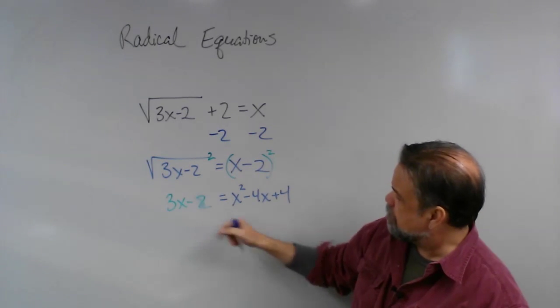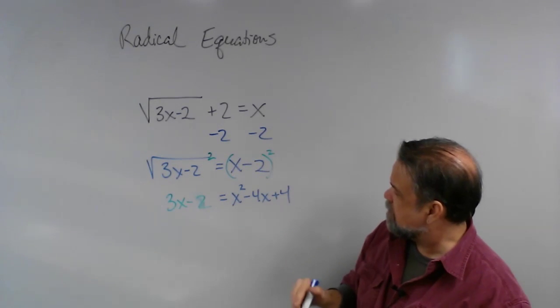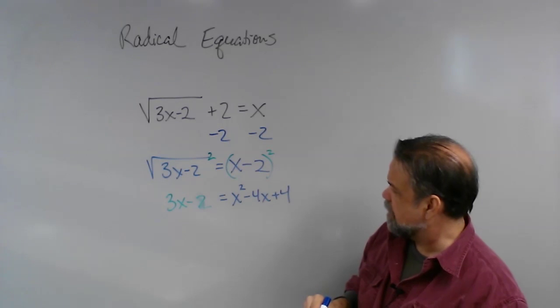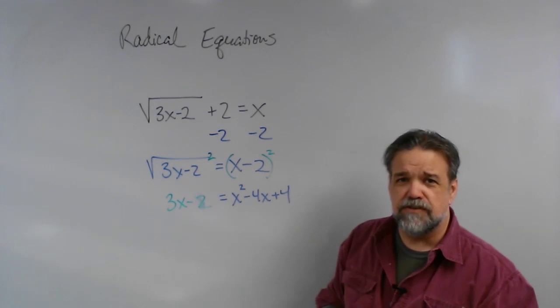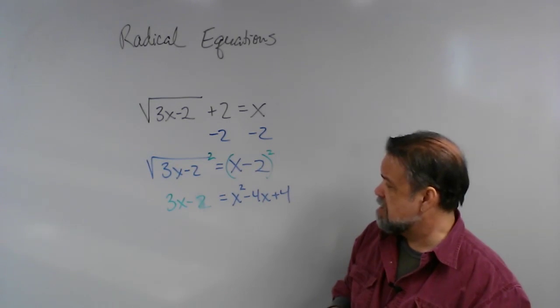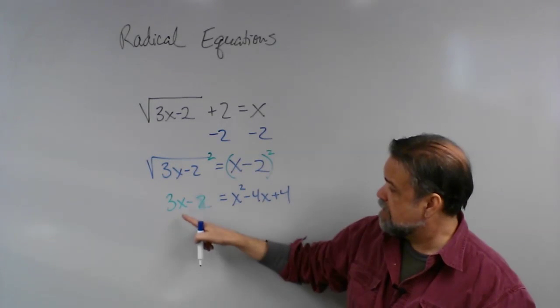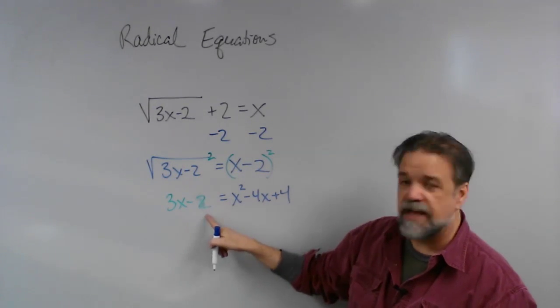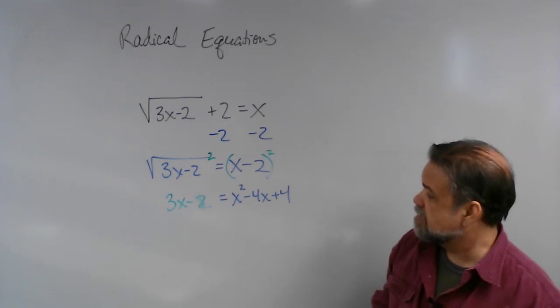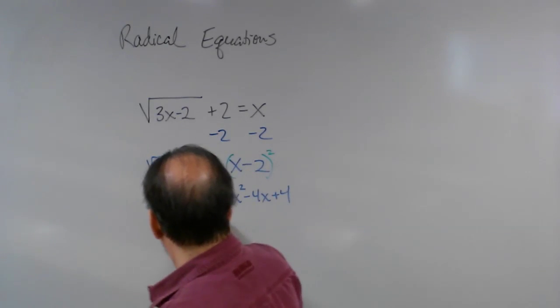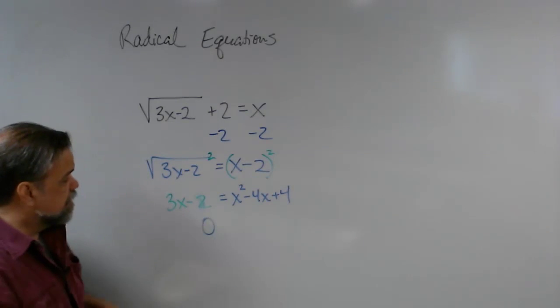Now I have basically a linear equation equals a quadratic equation. What do I do to solve this? Well, I'll just subtract the linear part from the quadratic part. So in other words, I'm going to subtract 3x and add 2 to both sides, and that's going to get me a 0 over here.